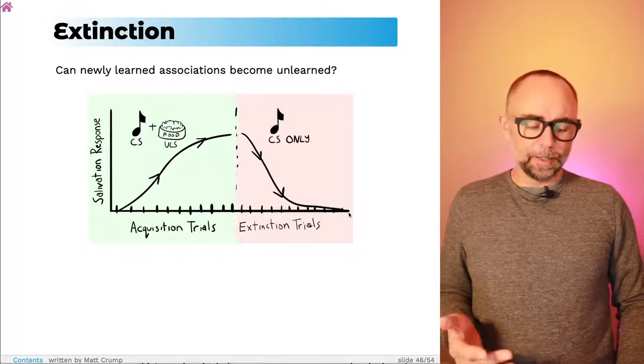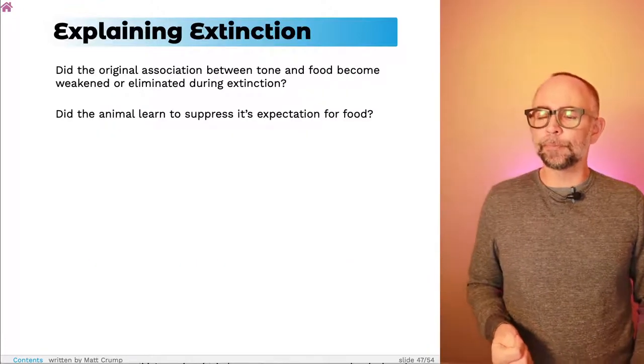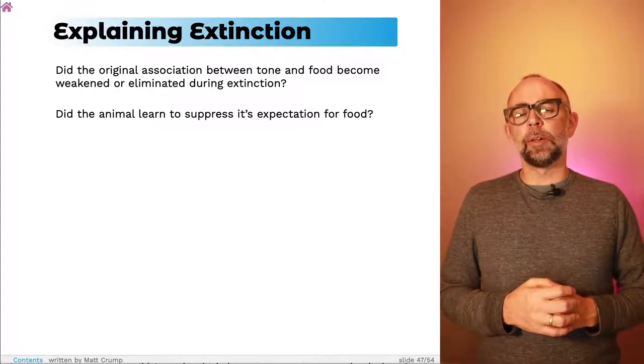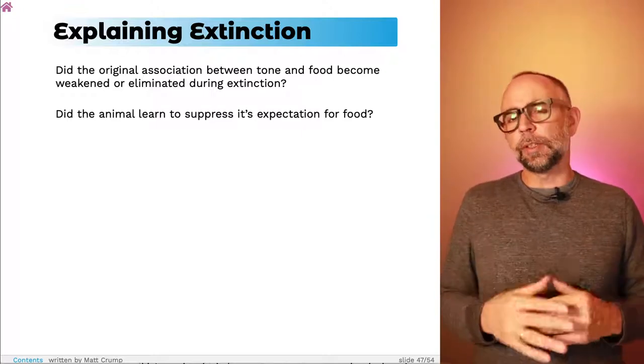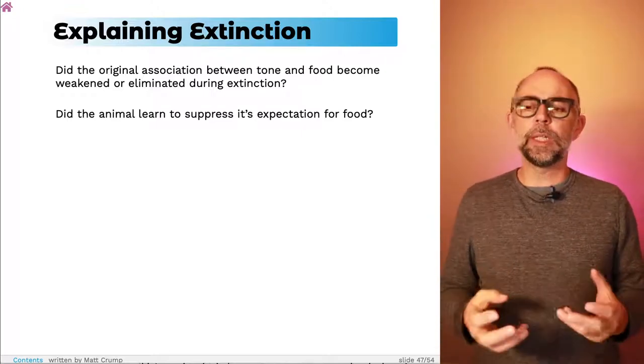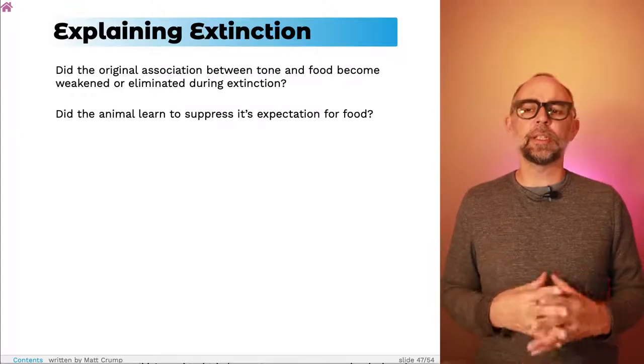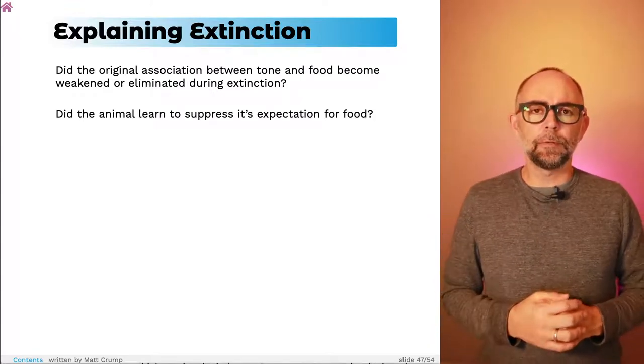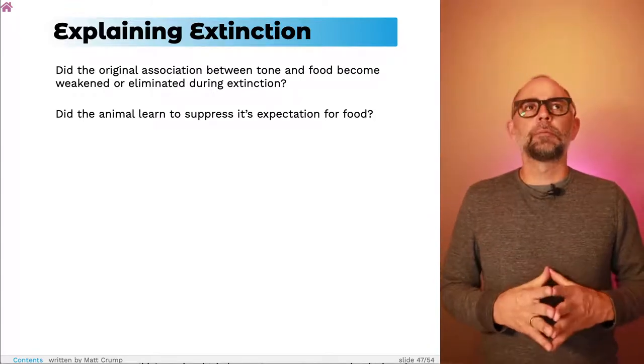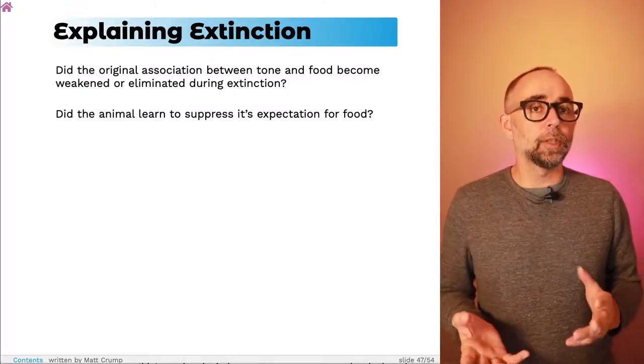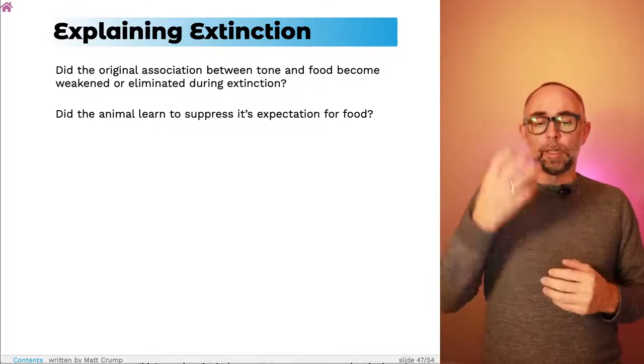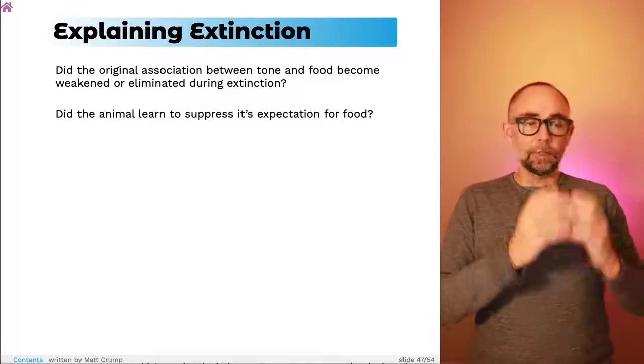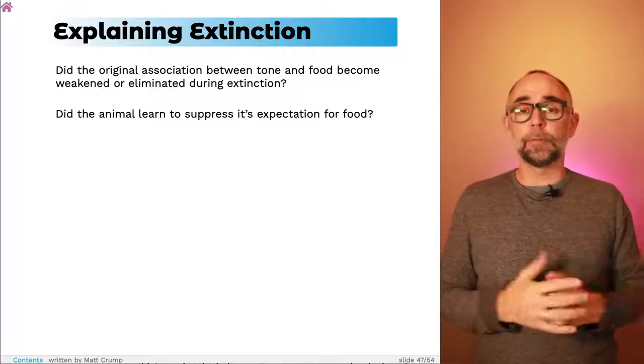But actually, let's ponder that a little bit more. So extinction does occur, but we still have questions about what happened. Did the original association between the tone and food become weakened or eliminated? Is that what extinction did? Did the animal learn to suppress its expectation for food? How about maybe the animal learned a new association? So it actually has two associations. One is this sound means I'm going to get food. They learned that. And they also learned that this sound means I'm not going to get food. And they have both of those things.